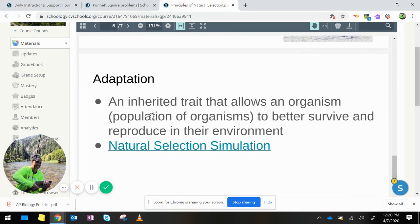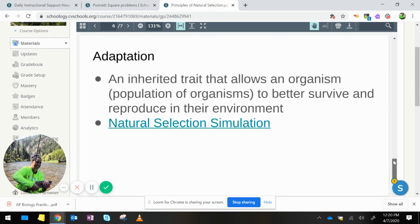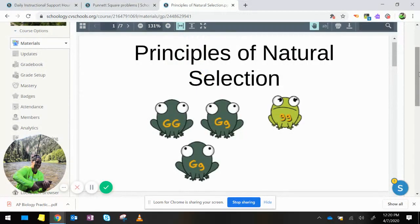And then adaptation, an inherited trait that allows an organism or a population of organisms to better survive and reproduce in their environment. And then we also looked at the natural selection simulation again.